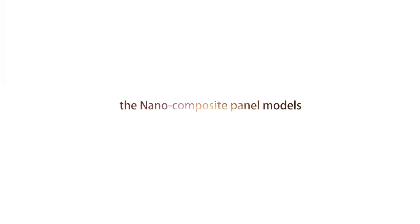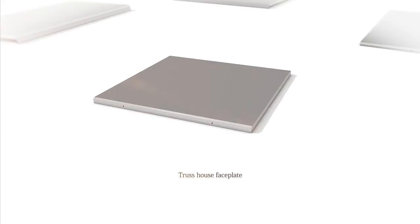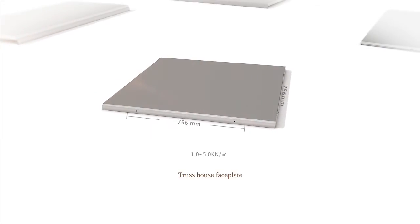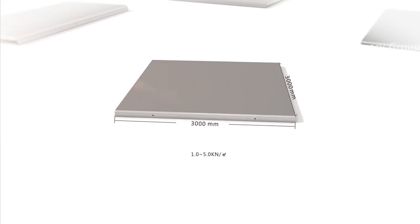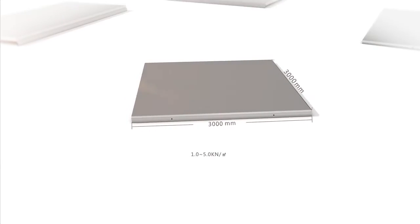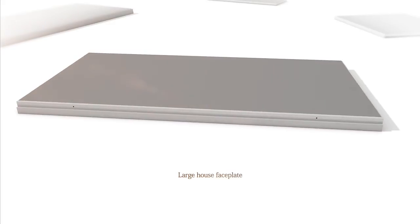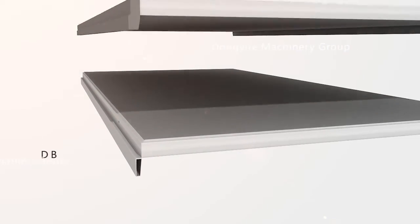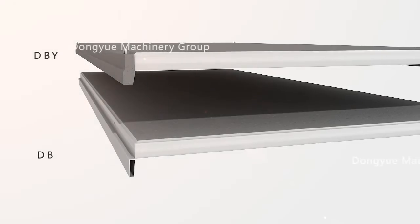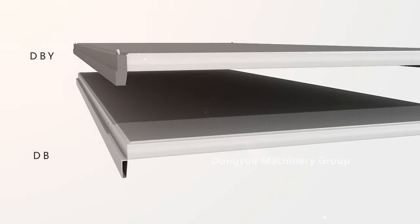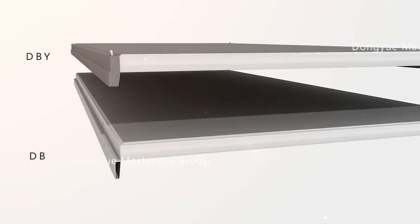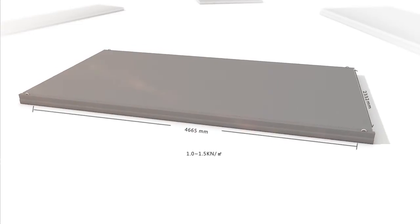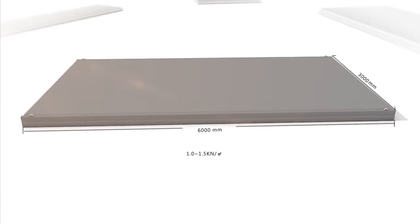Nanocomposite Panel models. Truss house faceplate: common specifications are 3 by 3 meters, with an allowable extra load of 1.0 to 5.0 kN per square meter. Large house faceplate: divided into two types — large roof with steel edge ribs (DB) and pre-stressed concrete side ribs (DBY). Common specifications are 3 by 6 meters.